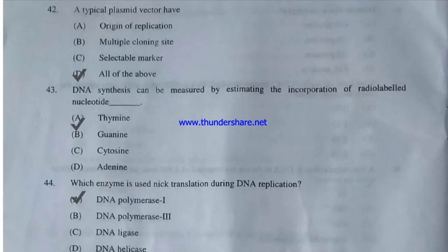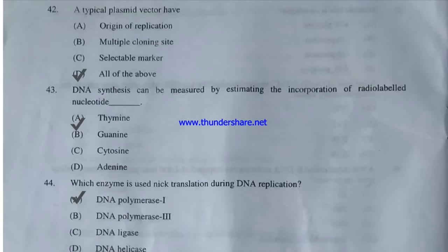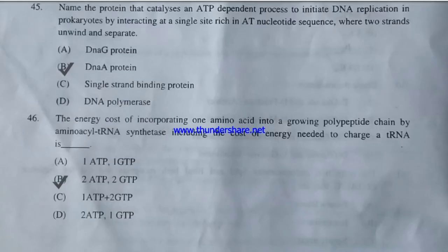DNA synthesis can be measured by estimating the incorporation of radiolabelled nucleotide — thymine, guanine, cytosine, or adenine? The answer is A — thymine. Which enzyme is used in nick translation during DNA replication — DNA polymerase I, DNA polymerase III, DNA ligase, or DNA helicase? The correct answer is DNA polymerase I — it is used in nick translation during DNA replication.